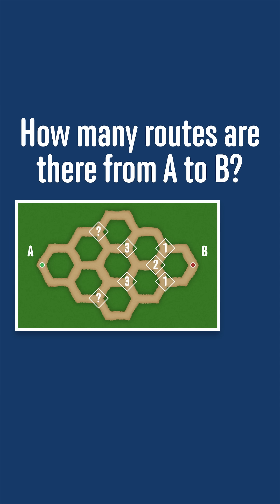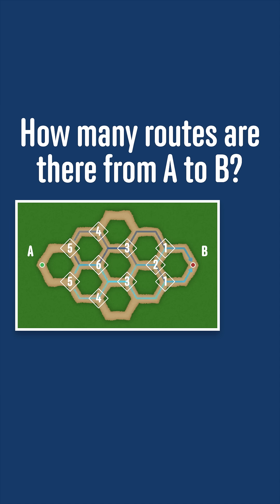So from either of these two points, there are 3 plus 1, or 4 routes. From this point, there would be 3 plus 3, or 6 routes. From these points, there are 6 plus 4, or 10 routes. And finally, from A, there are 10 plus 10, or 20 routes in total. Well done if you got that.